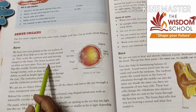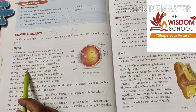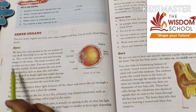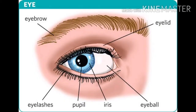Eyes are covered with flap-like eyelids. As you can see in the image, just above our eyes are eyelids. Eyelids protect the eyes from foreign matter such as dust, dirt, and other debris. The eyelashes present on the eyelids and the eyebrows also protect the eyes from dust.